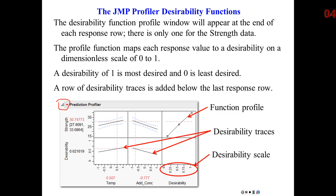and basically what these desirability traces do, they show you how the desirability of the response relates to the settings of the factors. So at temperature at 0.507 and concentration minus 0.777, if I go up in concentration, desirability goes down. In other words, the response is less desirable,